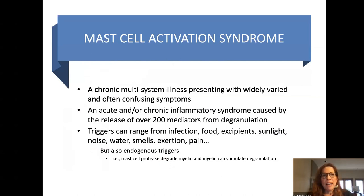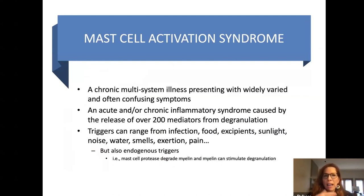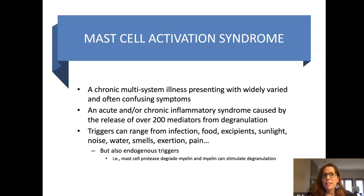The next diagnosis that's part of the Pentad is mast cell activation syndrome, which in and of itself is a whole topic I could talk about for hours. It is a chronic multi-system illness with many different symptoms that often confuse doctors and patients about why these things are happening to their bodies. It can be acute in nature — very often there's a history of some level of atopy, like allergies, eczema, or asthma — and it causes the mast cells, which are part of our innate immune system, to become reactive. They are our first responders and they will degranulate. While we often focus on histamine, there are over 200 different mediators, most of which are very inflammatory.